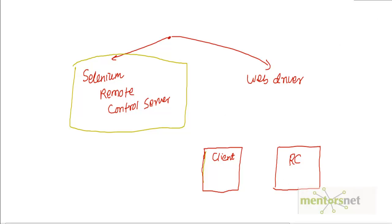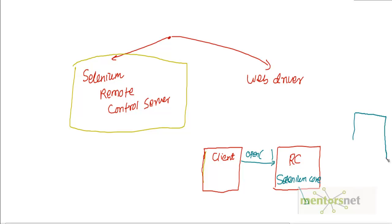The Selenium Remote Control server consists of a JavaScript library called Selenium Core. Selenium Core is basically a set of JavaScript functions. When the client says to open a URL, it sends a command — for example, 'open' with a parameter like 'orbitz.com' — and also specifies which browser to open. The RC server opens that browser, say Firefox, and then injects the Selenium Core JavaScript functions into that Firefox browser.